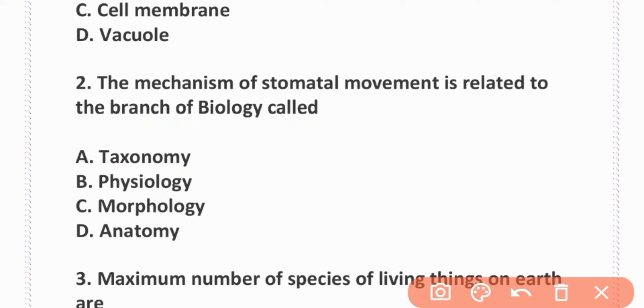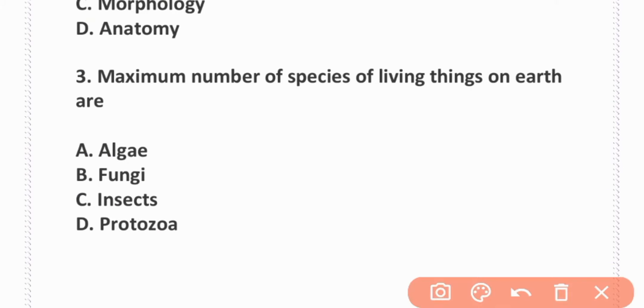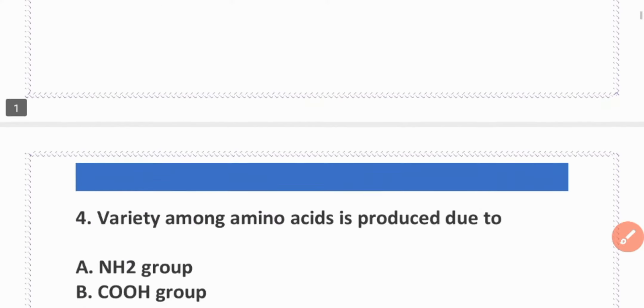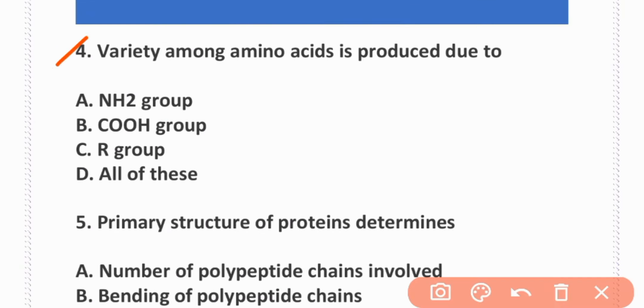Option B is correct, physiology. The maximum number of species of living things on earth are insects. C is correct, insects. The variety among amino acids is produced due to R group.